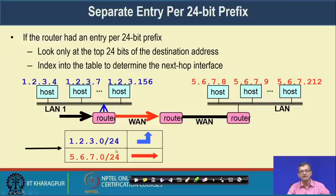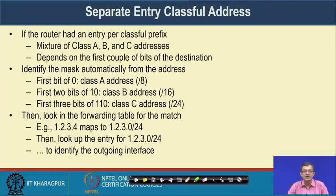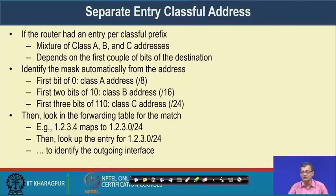A slash-24 IP mask means the first 24 bits are the network. For class-full addressing, each router had an entry per classful prefix — a mix of class A, B, C addresses identified by the first couple of bits of the destination. The mask is identified automatically: if the first bit is 0, the mask is slash-8; if 10, the mask is slash-16; if 110, the mask is slash-24. The router looks at the forwarding table for a match.